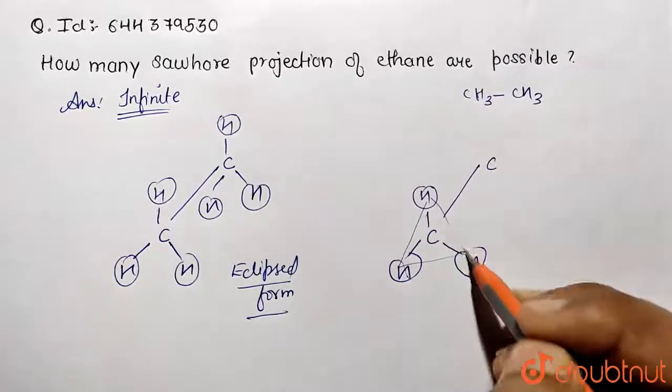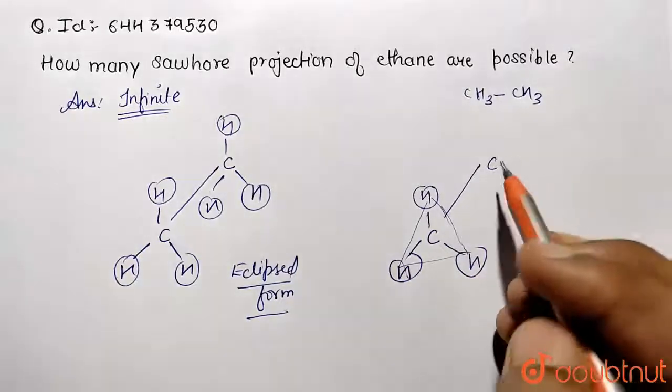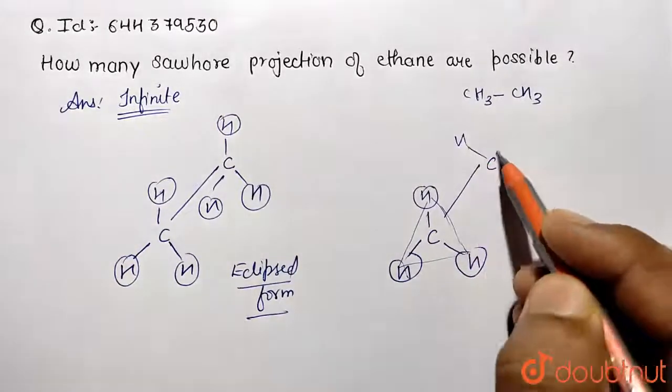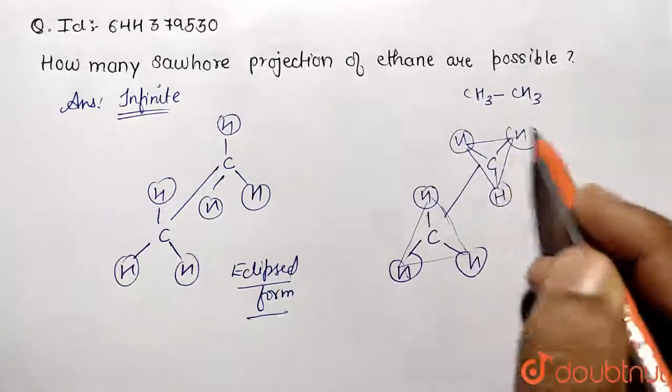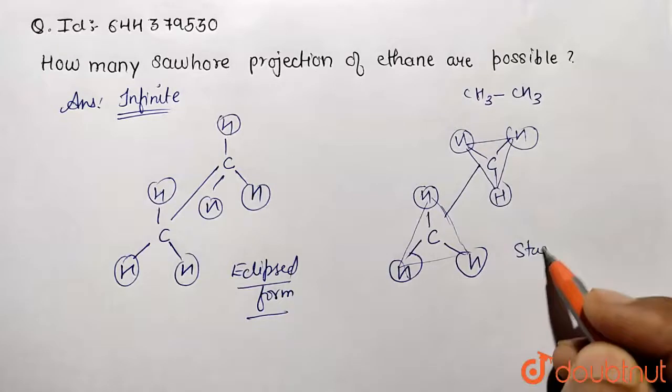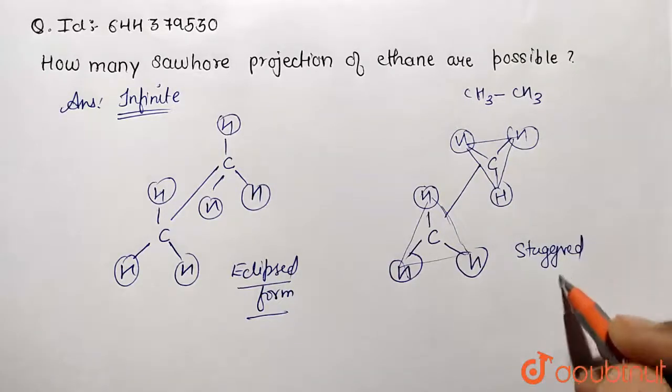This triangular face is going to be exactly opposite, faced by the opposite triangle. So over here we are having the opposite face of the triangle. So this form of orientation is known as the staggered one. Staggered form.